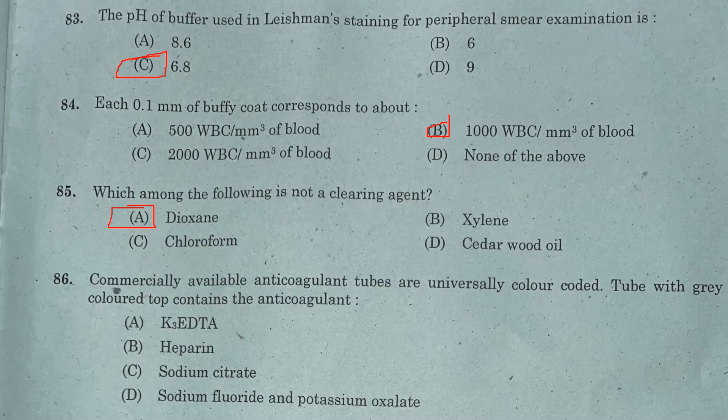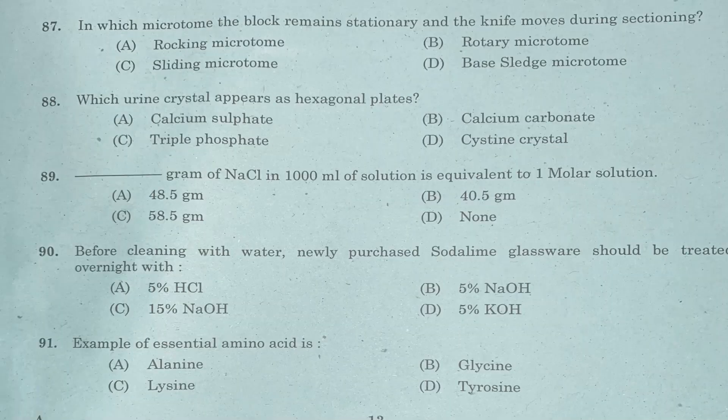Question 86: Commercially available anticoagulant tubes are universally color coded. The tube with a gray color top contains the anticoagulant — Option A: K3 EDTA. Option B: heparin. Option C: sodium citrate. Option D: sodium fluoride and potassium oxalate. Answer is Option D, sodium fluoride and potassium oxalate.